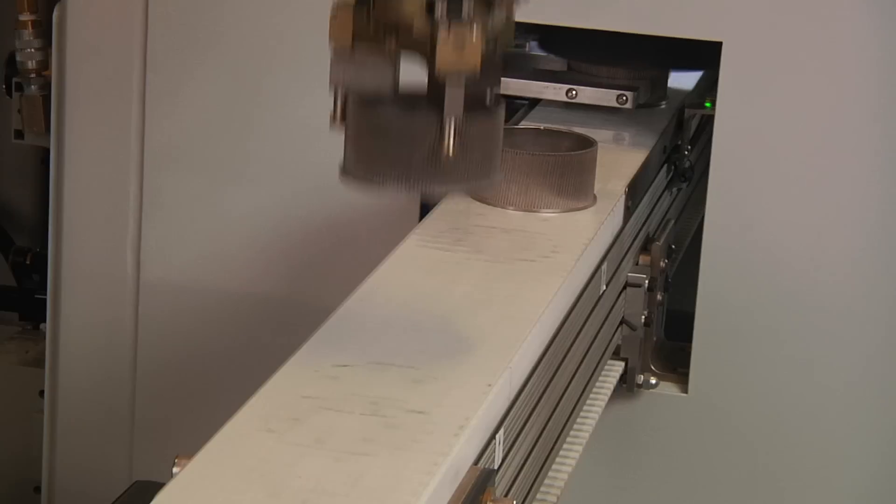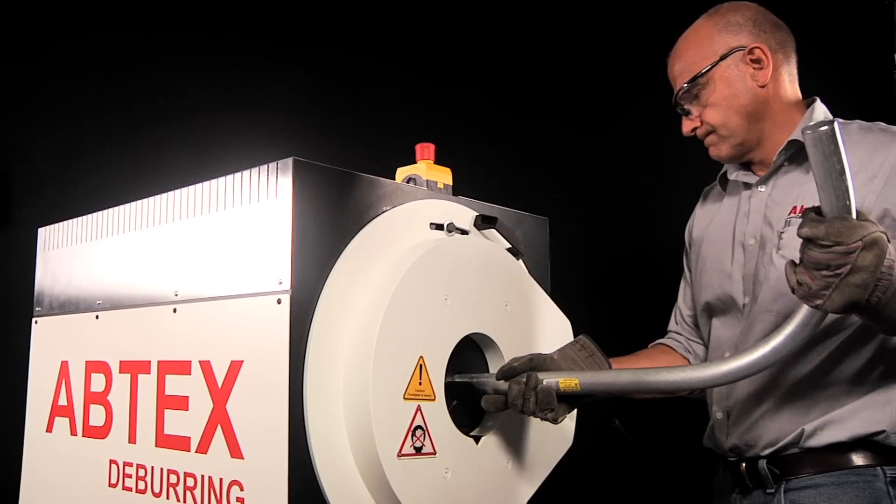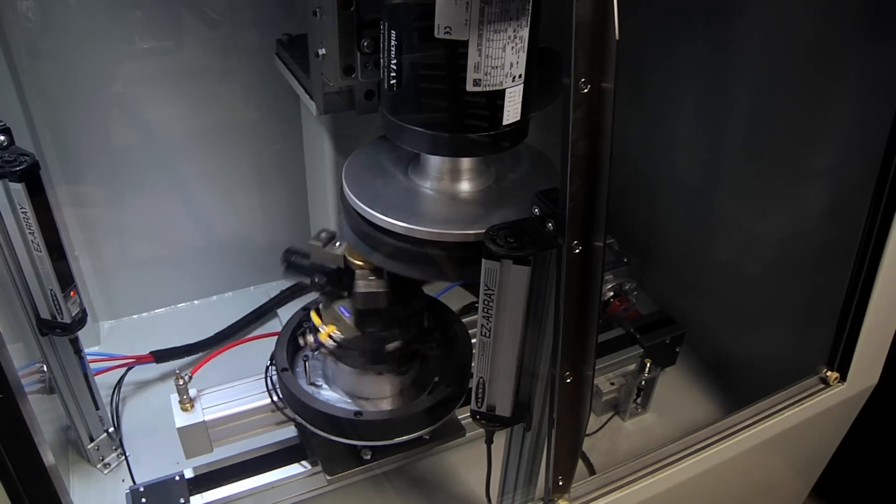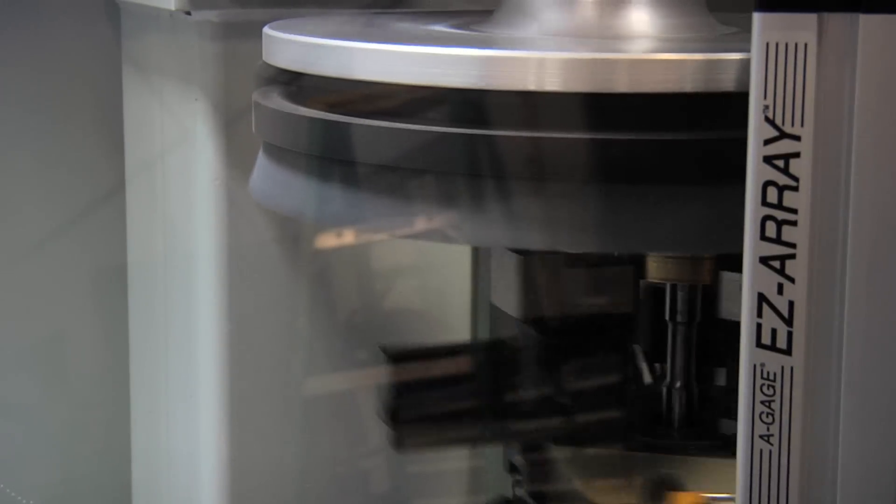Since 1980, Abtex Corporation has maintained a reputation for customizing better ways for manufacturers worldwide to deburr fine-blanked, powdered metal, aluminum, and other machined parts.